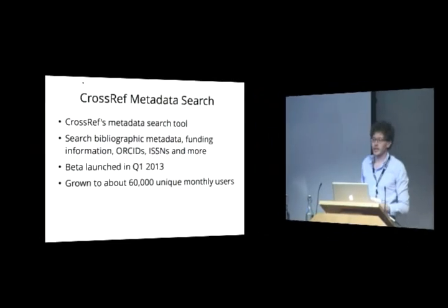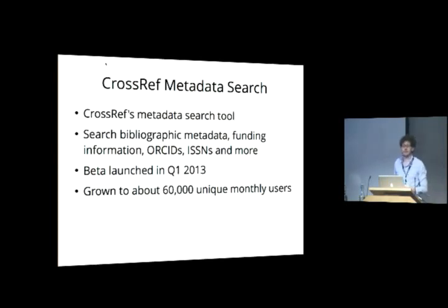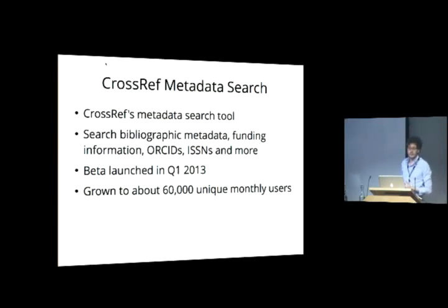This is a metadata search tool. It's not really a discoverability tool. It's in some ways more of a reporting tool because it doesn't actually index full-text content — it just indexes the metadata that CrossRef collects. In fact, it indexes pretty much all of the metadata that CrossRef collects: bibliographic metadata, scholarly literature, various forms of identifiers, ORCIDs, ISSNs, funding information, and so on. So you can search and facet on all of those things using this tool.